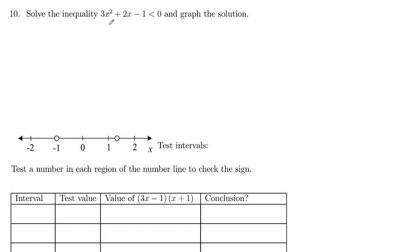In problem 10, we are solving a quadratic inequality here. This works the same way as when we had the rational inequalities. We want to find key numbers and then test intervals using a table.